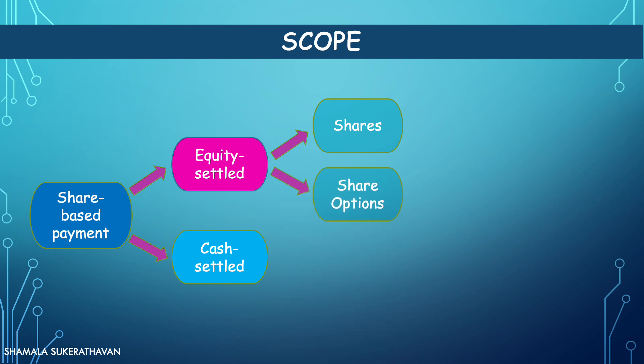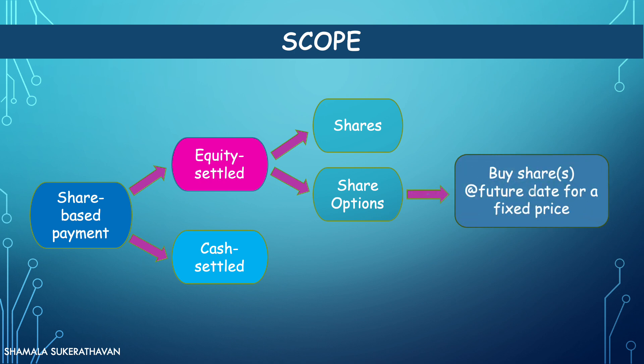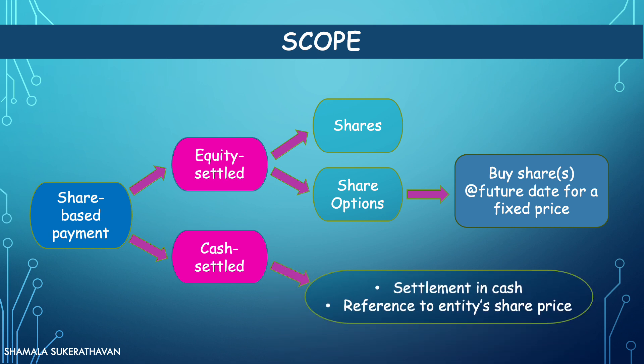A share option allows the holder to buy a certain number of an entity's shares at a fixed price in the future. For cash-settled share-based payment, an entity acquires goods or services in exchange for settlement in cash by reference to the entity's share price.